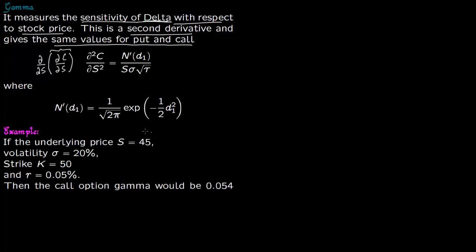Let us do an example. Say the spot price of the underlying is 45, volatility is 20%, strike is 50, risk-free interest rate is 0.05%, time to expiration is 3 months. Then the call option gamma would be 0.054, and put option gamma is the same because gamma is the same for put and call.